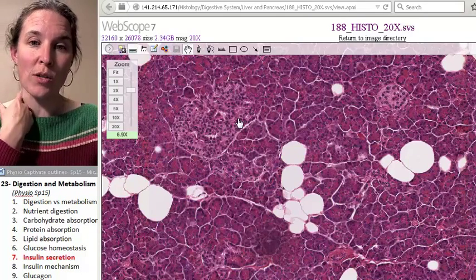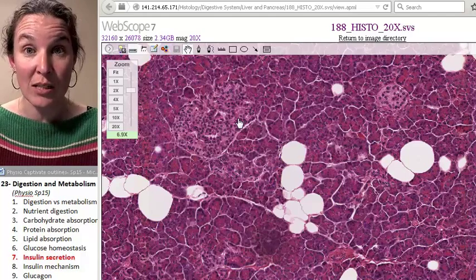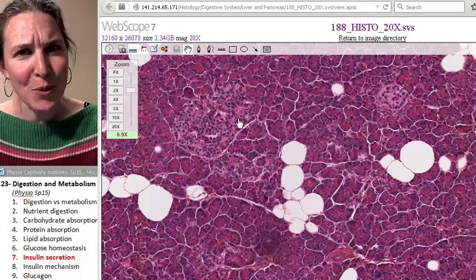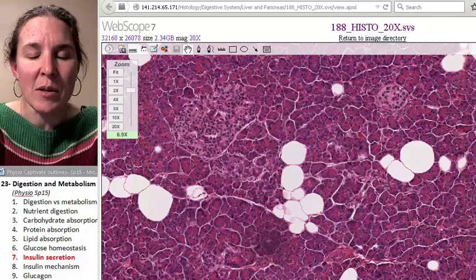whoa, there's glucose here, so we need to secrete some insulin. Number two, it's where we're going to secrete the insulin. So let's go look at the mechanism of this.